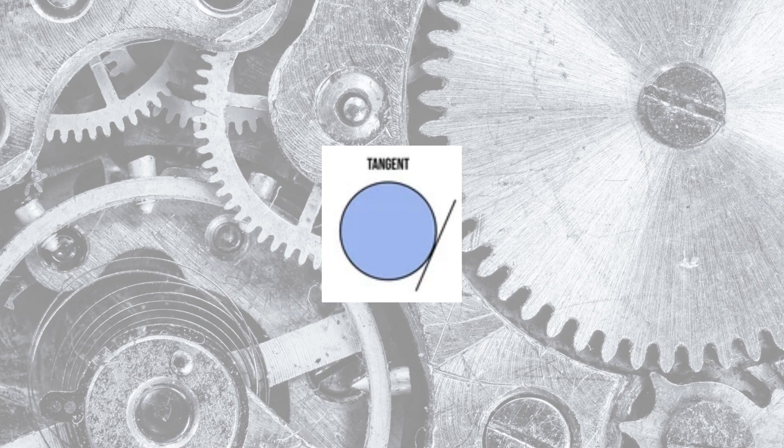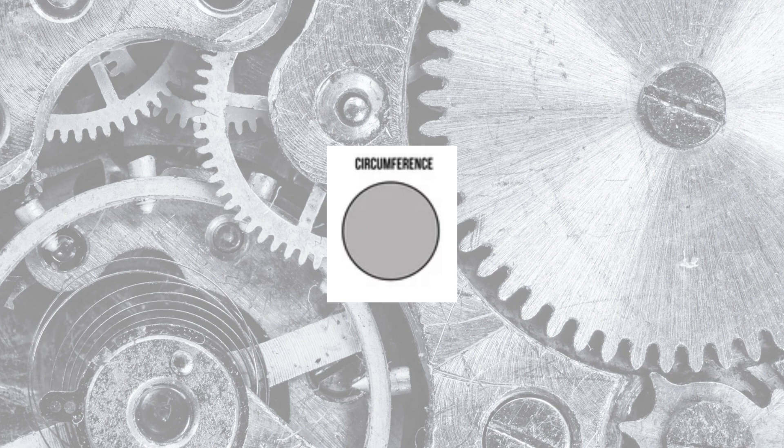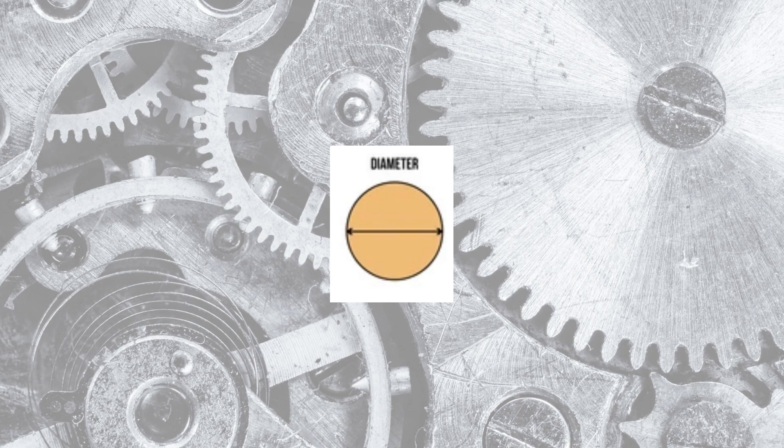Tangent is a straight line that touches the edge of the circumference at one point but does not cross it. Chord is a straight line that joins any two points on the circumference. Circumference is the perimeter of a circle. Diameter is a straight line that touches the circumference through the centre of the circle.